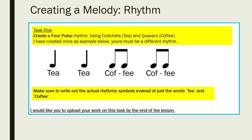So, Task 1: creating a melody — rhythm. Create a four-pulse rhythm using crotchets and quavers. Remember, crotchets are 'tea' and quavers are 'coffee.' You can combine those together to create a rhythm. I have created mine as an example below — yours must be a different rhythm. So here I've got tea, tea, coffee, coffee. That is four pulses.